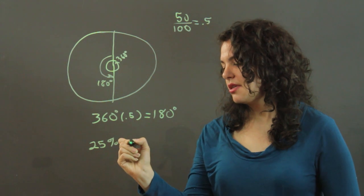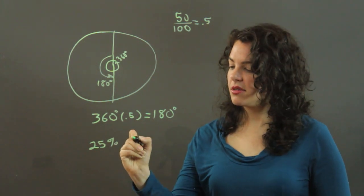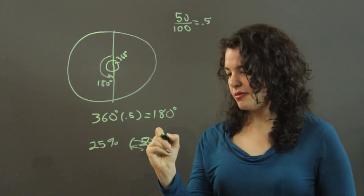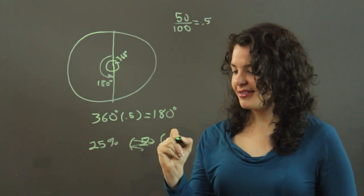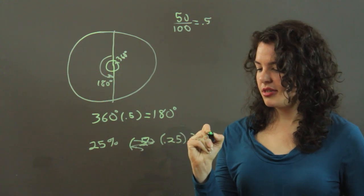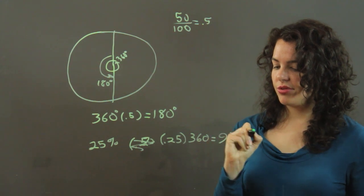then you take the decimal form of 25%, which is 0.25. Let me rewrite that: 0.25 times 360 degrees, and you get 90 degrees.